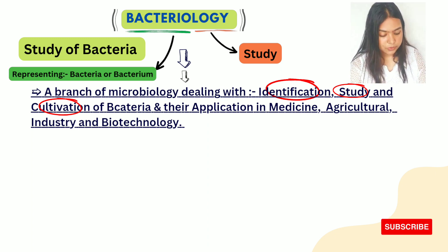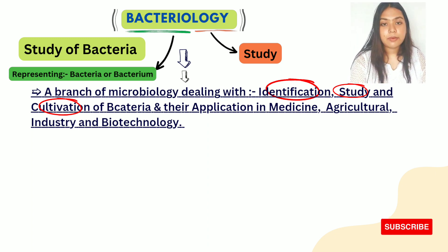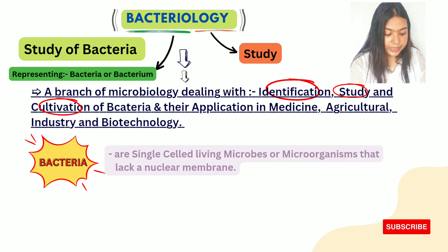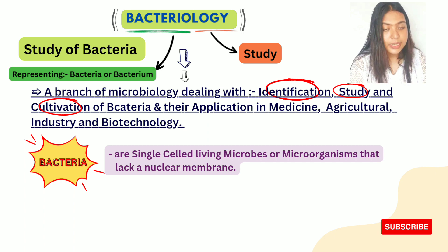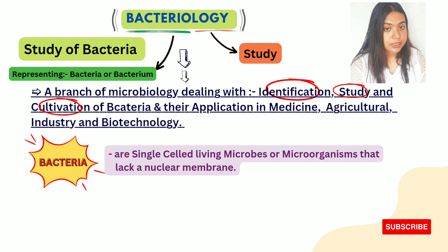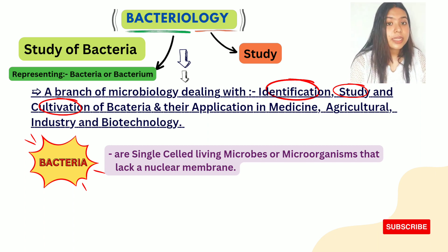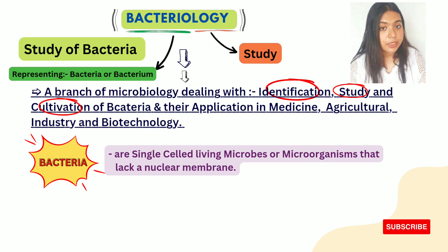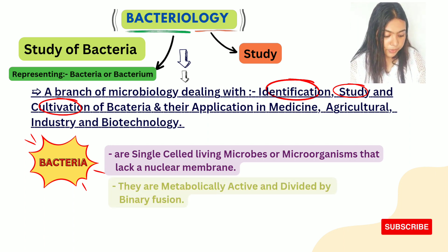Now about bacteria themselves: bacteria is a prokaryotic cell — it is a single-celled living microorganism that lacks a nuclear membrane. Prokaryotic cells are organisms that do not have a nuclear membrane around their nucleus. They are metabolically active and reproduce by binary fission.